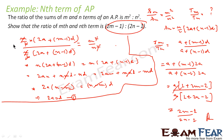And that's what we were supposed to prove — the mth term by nth term is (2m − 1) by (2n − 1). In summary: we wrote the Sn formula, equated Sm by Sn to m² by n², found that 2a equals d, then substituted into the Tm by Tn expression to get the answer.